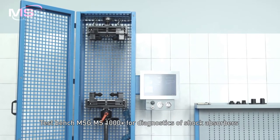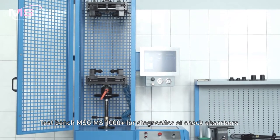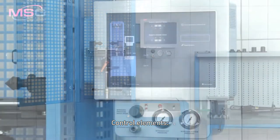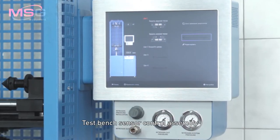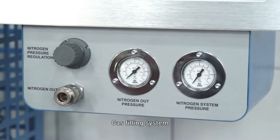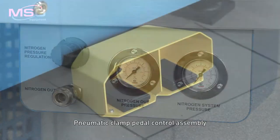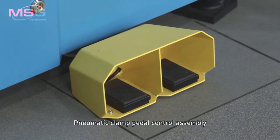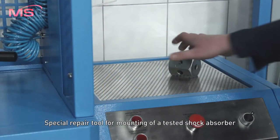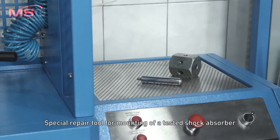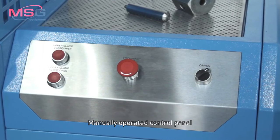Testbench MSG MS-1000 Plus for diagnostics of shock absorbers. Control elements include testbench sensor control assembly, gas filling system, pneumatic clamp pedal control assembly, special repair tool for mounting a tested shock absorber, and manually operated control panel.